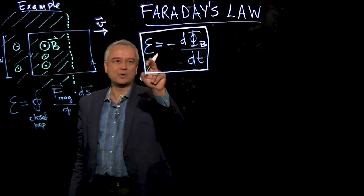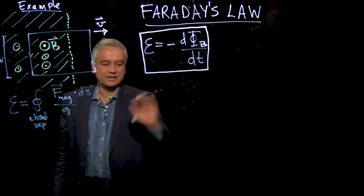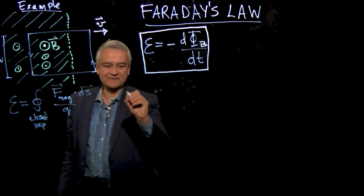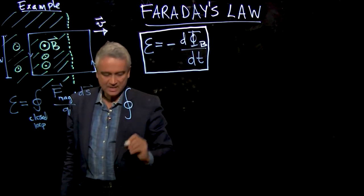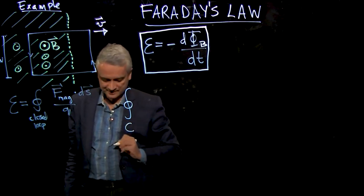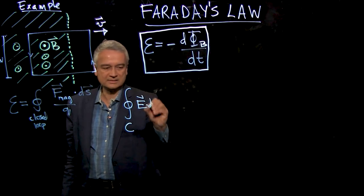So how do I write this in a little bit more generic fashion? I do so as follows. I'm going to write the EMF out. The EMF is the integral around some closed contour C of E dot dS,